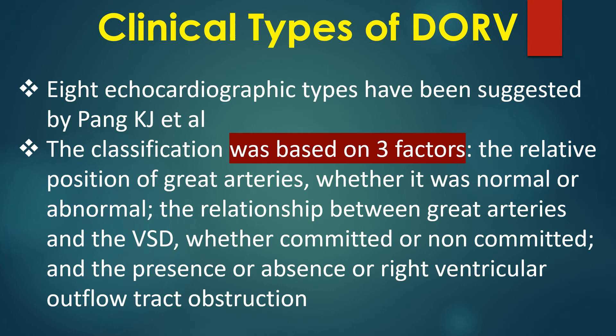Eight echocardiographic types have been described by Pang and associates. The classification was based on three factors: the relative position of the great arteries — whether normal or abnormal; the relationship between the great arteries and the VSD — whether committed or non-committed; and the presence or absence of right ventricular outflow tract obstruction.